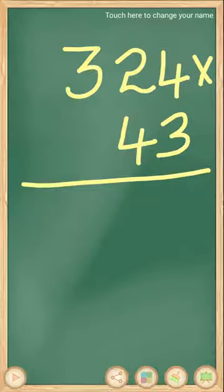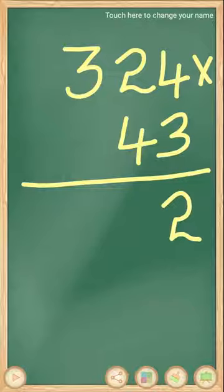Next example, 324 × 43. First you multiply 3 × 4, 3 × 4 equals 12, carry 1. Next 3 × 2 equals 6, plus 1 equals 7. Next 3 × 3 equals 9.